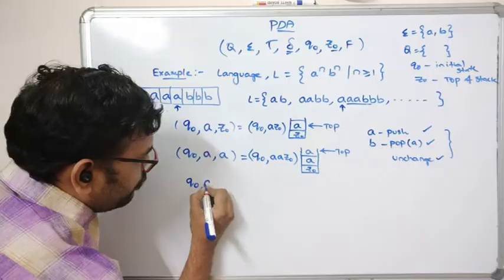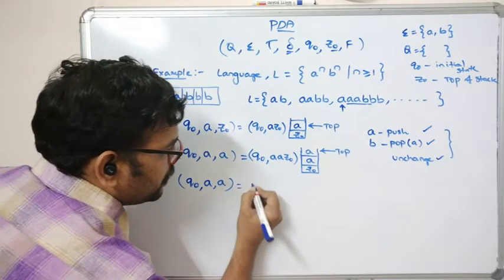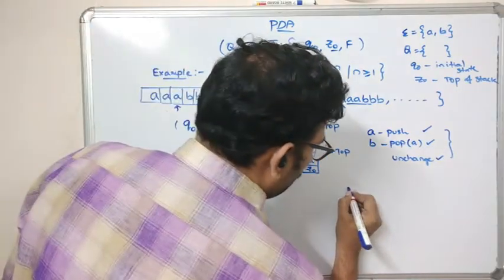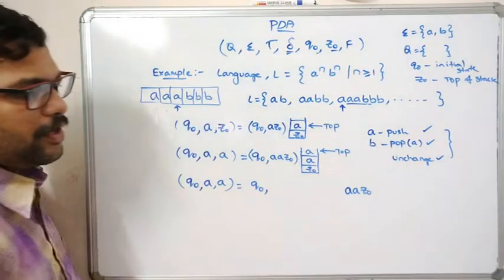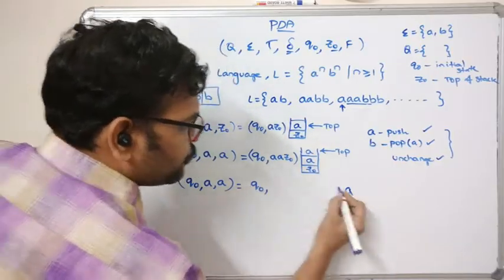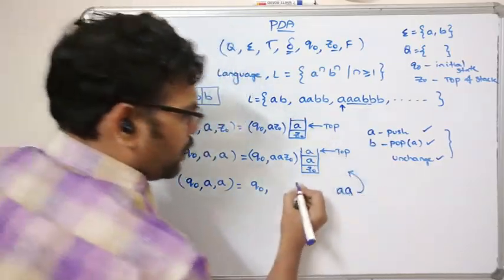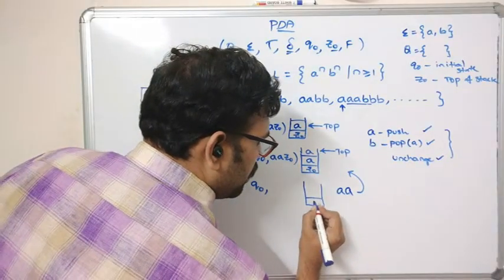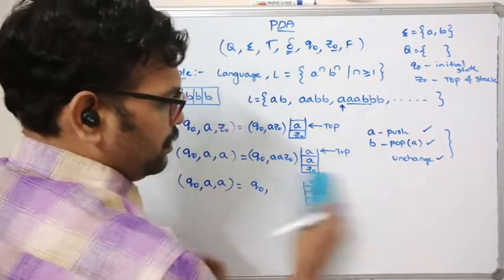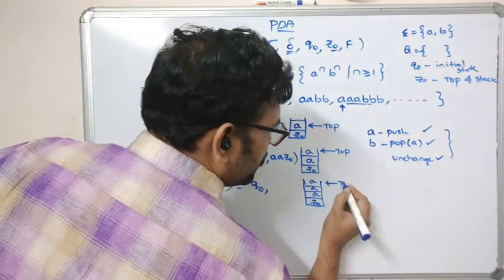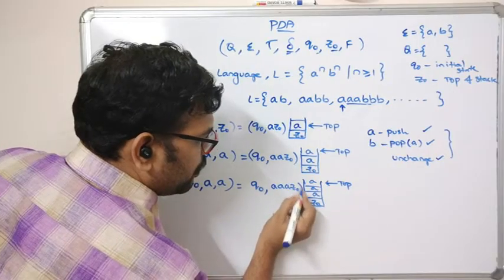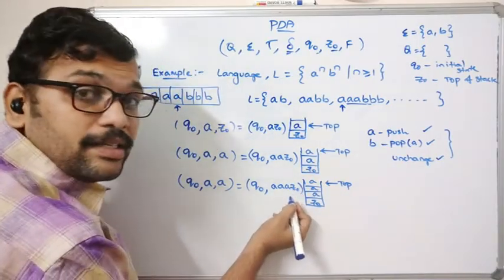Moving to the third 'a', the transition δ(q₀, a, a) is the same — we insert once more. Bring out the top of the stack, add the new 'a', and push back. The resultant stack content becomes 'aaaz₀', with 'a' remaining at the top of the stack.